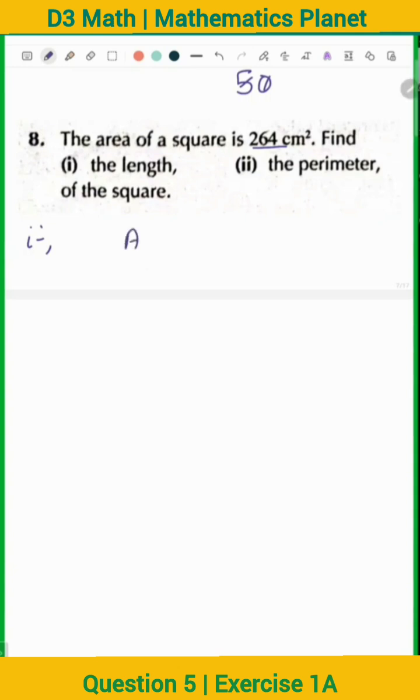So area of the square is equal to 264 cm square. Find the length. How to find the length? Area is equal to length square equals 264. So it means length is equal to square root of 264. But how to find the square root of 264?